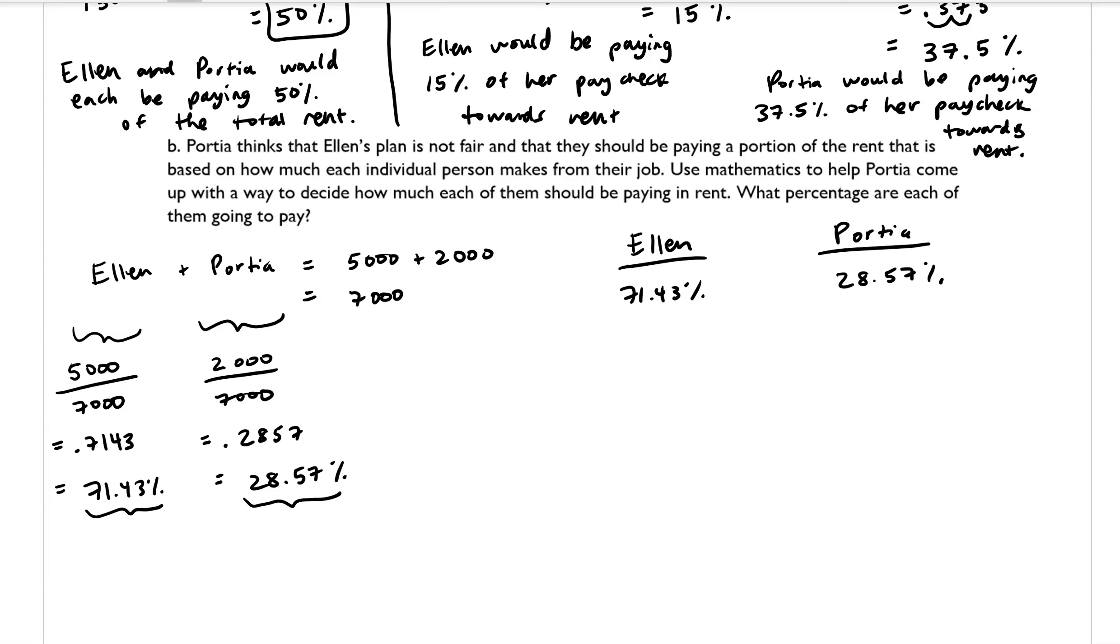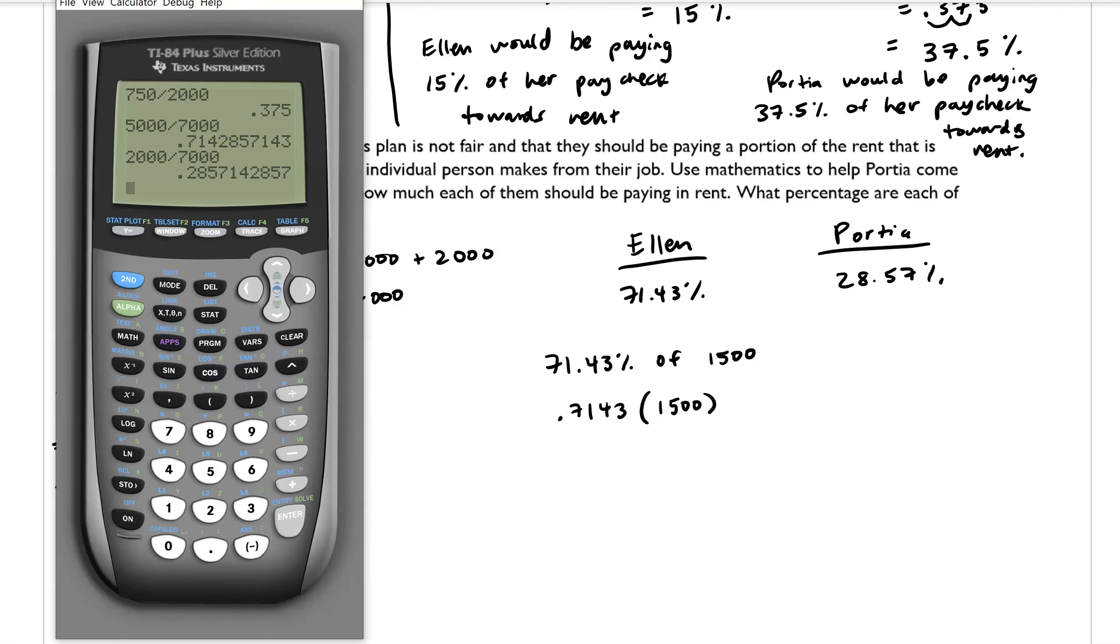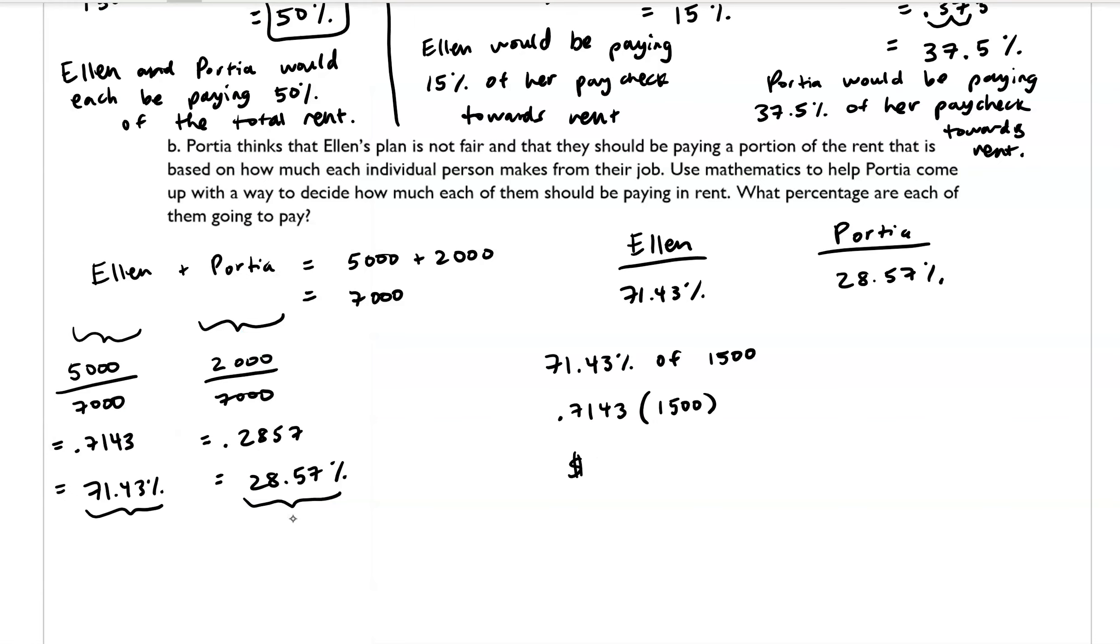And the way that we would calculate how much that would be for the $1,500 is, usually the word of indicates multiplication. So if we were to take 71.43% of $1,500, we would multiply. But we need to convert it into a decimal first. So 0.7143 times $1,500. And let's throw that into our calculator. That is $1,071.45.